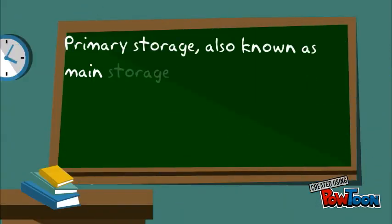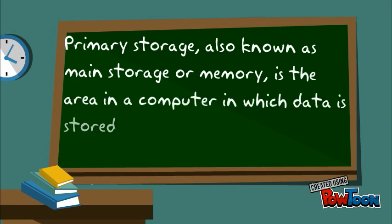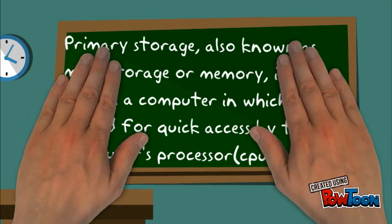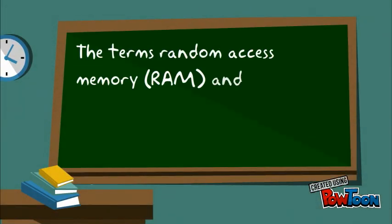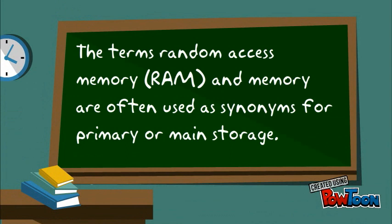Primary storage, also known as main storage or memory, is the area in the computer in which data is stored for quick access by the computer's processor, or CPU. The terms random access memory, RAM, and memory are also used as synonyms for primary or main storage.